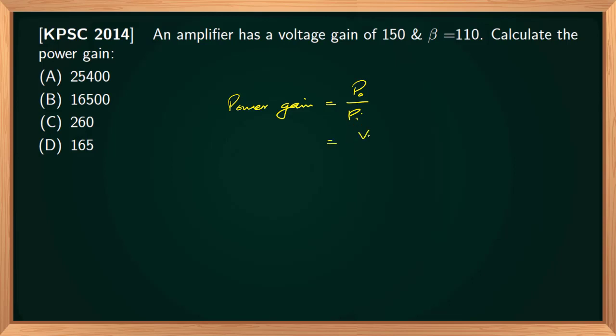We will calculate output power using this formula: V0 I0 by Vi into Ii, and this is voltage gain into current gain. V0 by Vi is voltage gain into current gain will give power gain. Voltage gain is given as 150 into current gain. Current gain is beta, beta equal to current gain is given as 110.